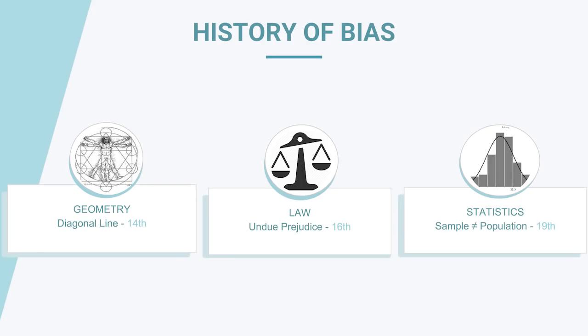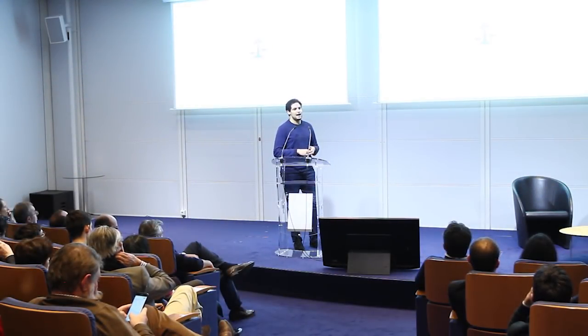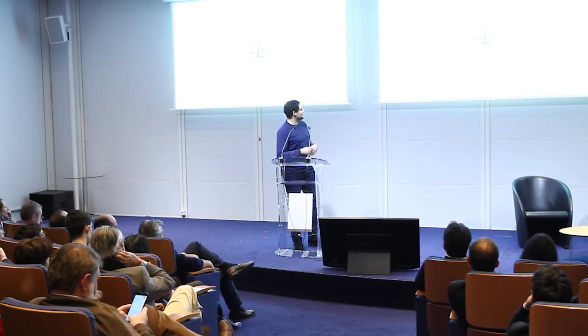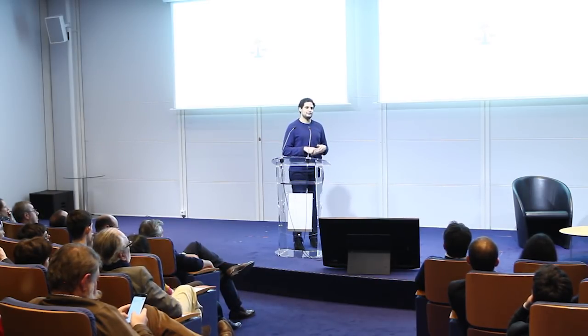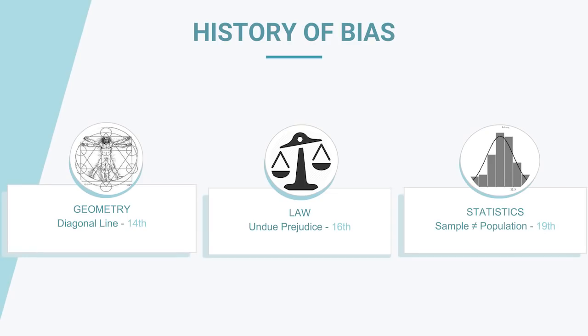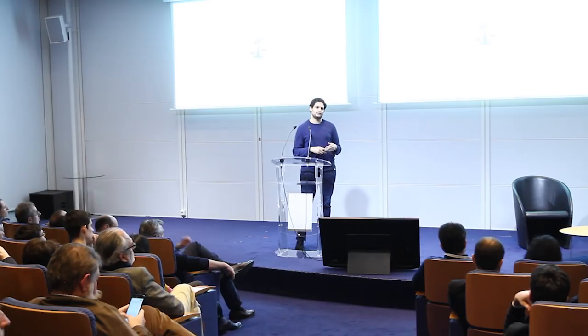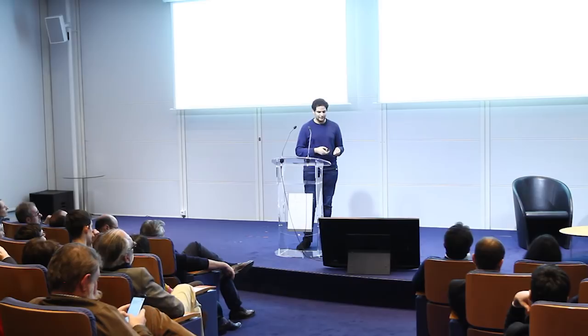To give a little history about the word 'bias': it appears for the first time in the 14th century in geometry, referring to an oblique or diagonal line. We had to wait until the 16th century to get a definition similar to what we have today — an undue prejudice. And in the 19th century, we got the statistical definition: the systematic difference between a sample and a population.